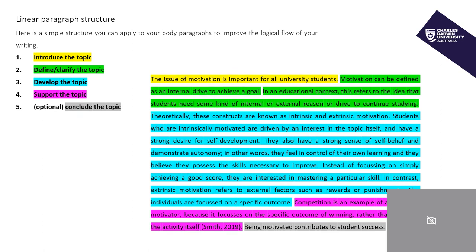I can describe the structure of this paragraph as a linear paragraph structure. This simply means that each sentence logically leads on from the previous sentence and it's written in a very clear structure. The colour coding refers to the following: number one, introduce the topic in yellow.